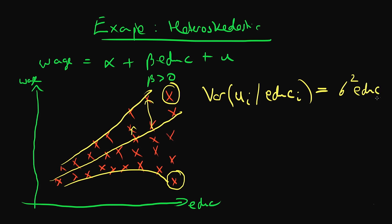So in this circumstance, the variance is increasing with education. And this is in contrary to the Gauss-Markov assumption of homoscedastic errors, which says that the variance of our errors given our independent variable education should be a constant.